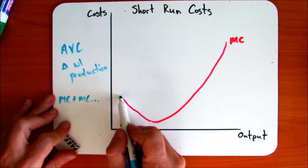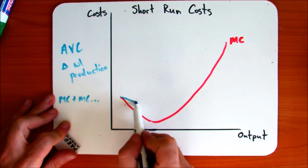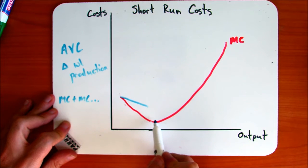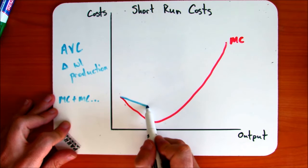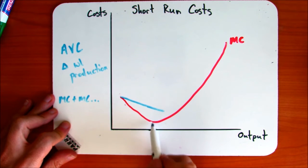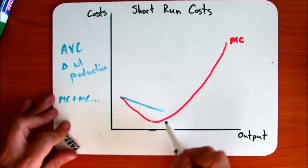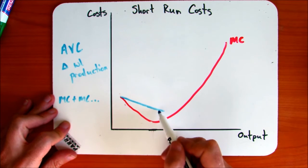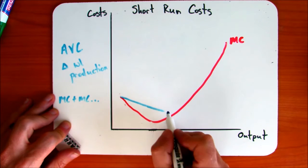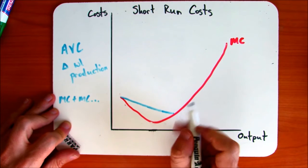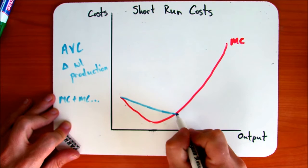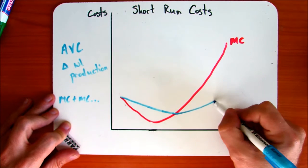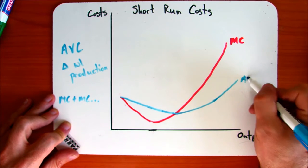What we will see is that average variable costs will fall when marginal costs are underneath them. So average variable costs will continue to fall even after the point of diminishing marginal returns, because even though marginal costs are increasing, they're still lower than what AVC was. So we won't see AVC begin to increase until they meet marginal costs. And after that point, we'll see AVC rise.